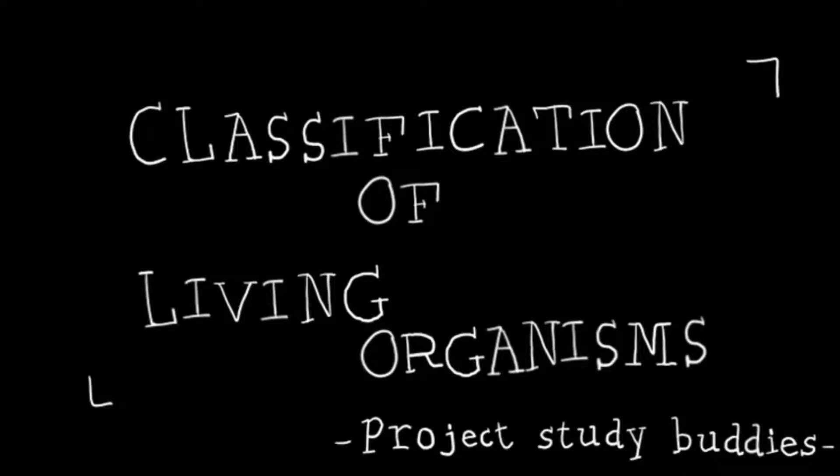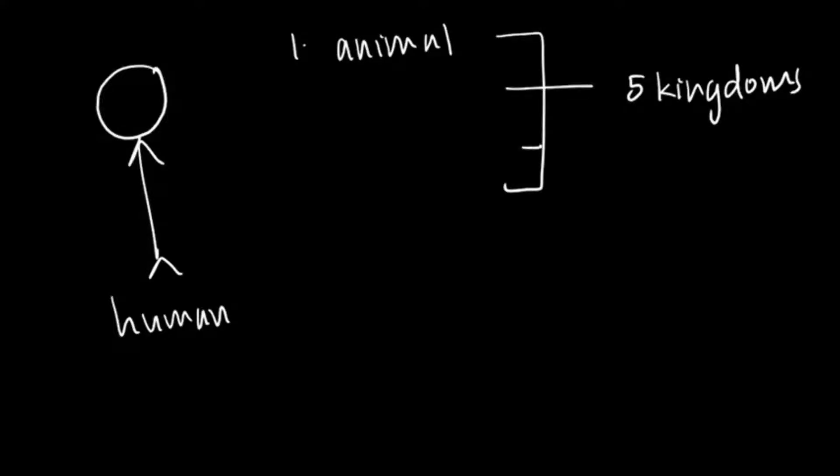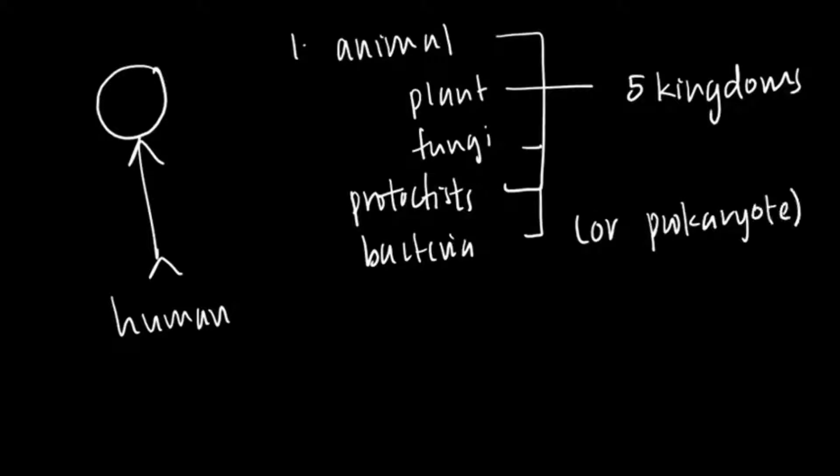So let's begin with things we already know. We, humans, are animals. We belong to one of the five kingdoms in the taxonomy or classification system, along with plant, fungi, protoctist, bacteria or prokaryote. And obviously, we are living organisms. But do you know how do we define living things?